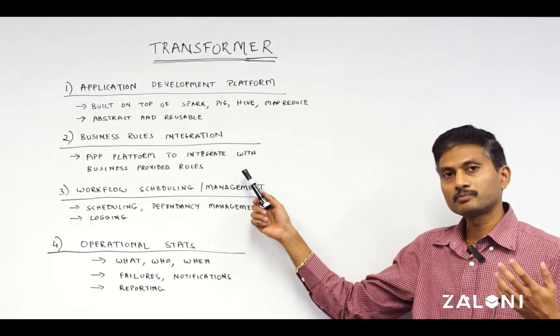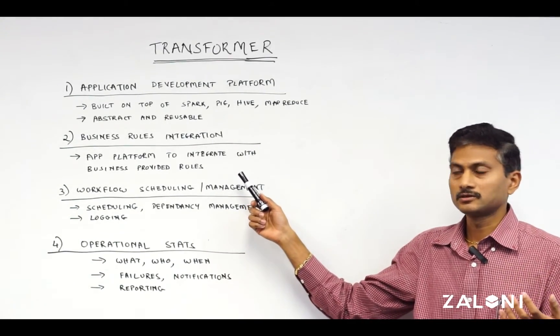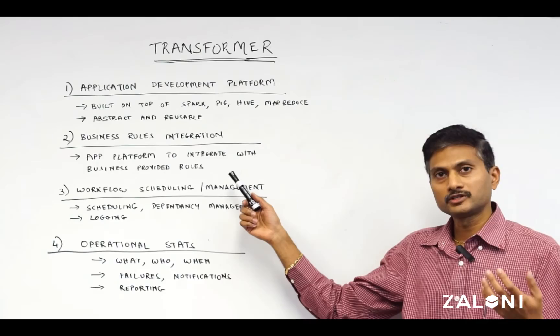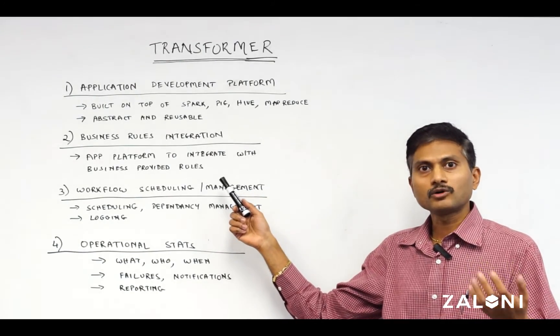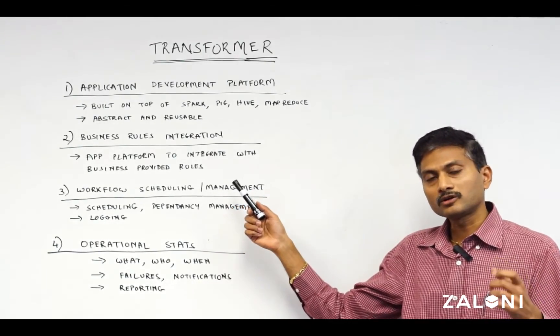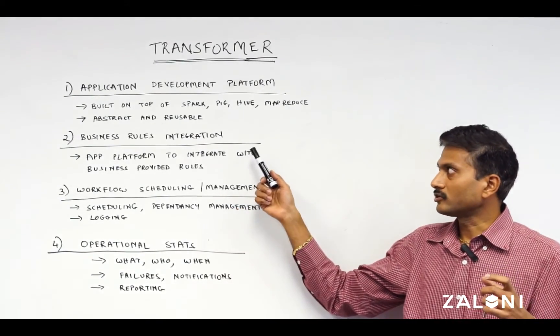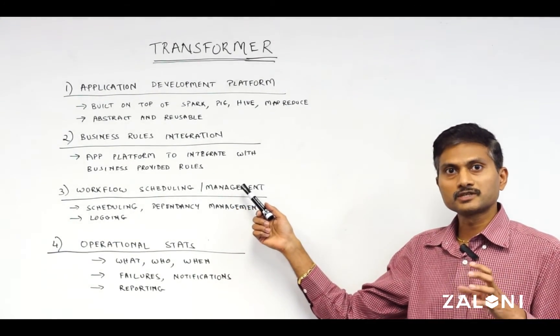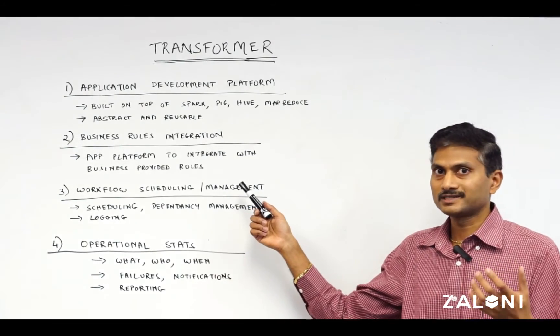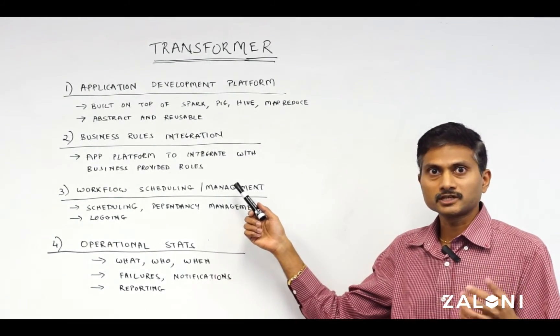Two, it should have business rules integration. Let's take an example of an insurance company trying to define policies. Now, the policies require multiple rules. The platform should integrate with rules given by business so that it doesn't require an IT change every time a rule changes.